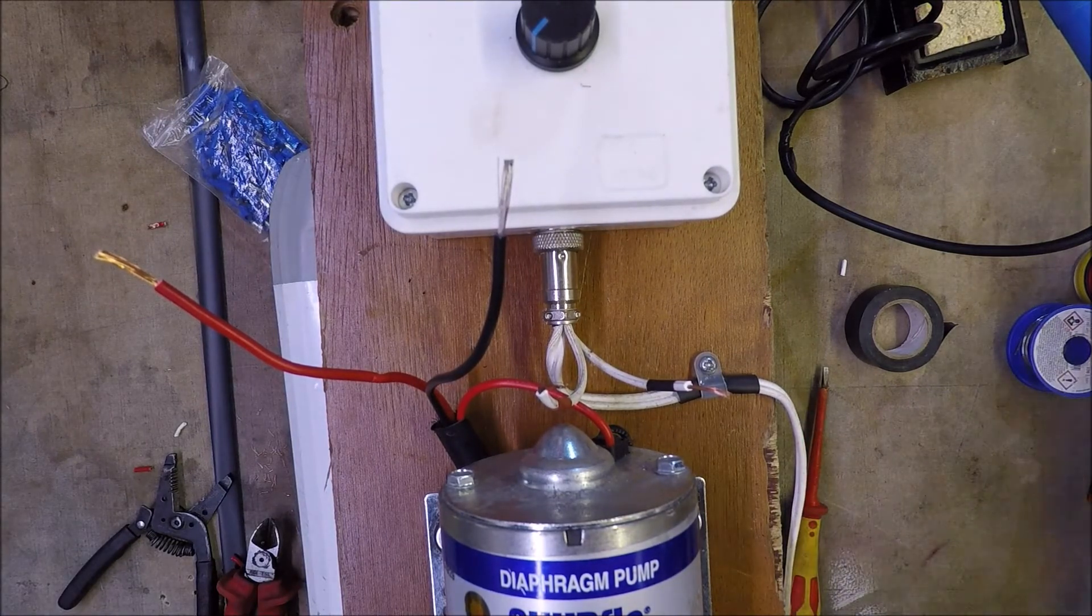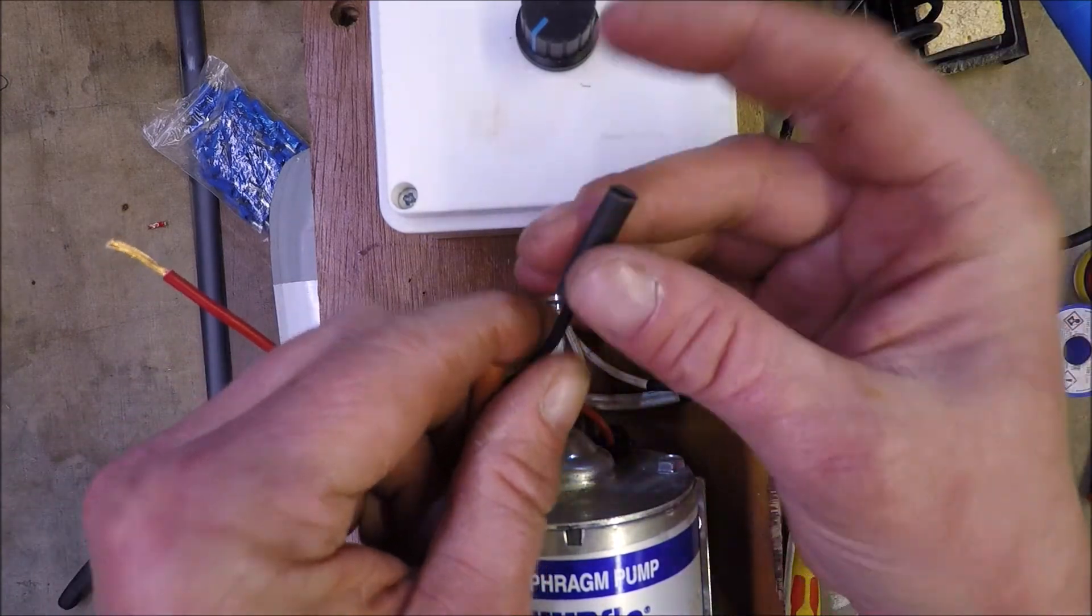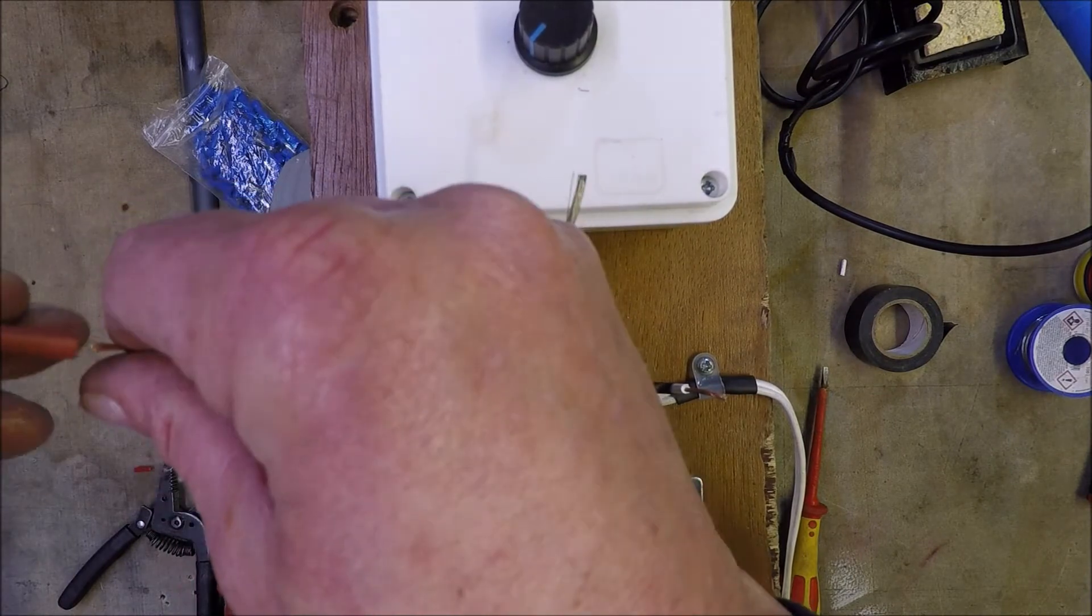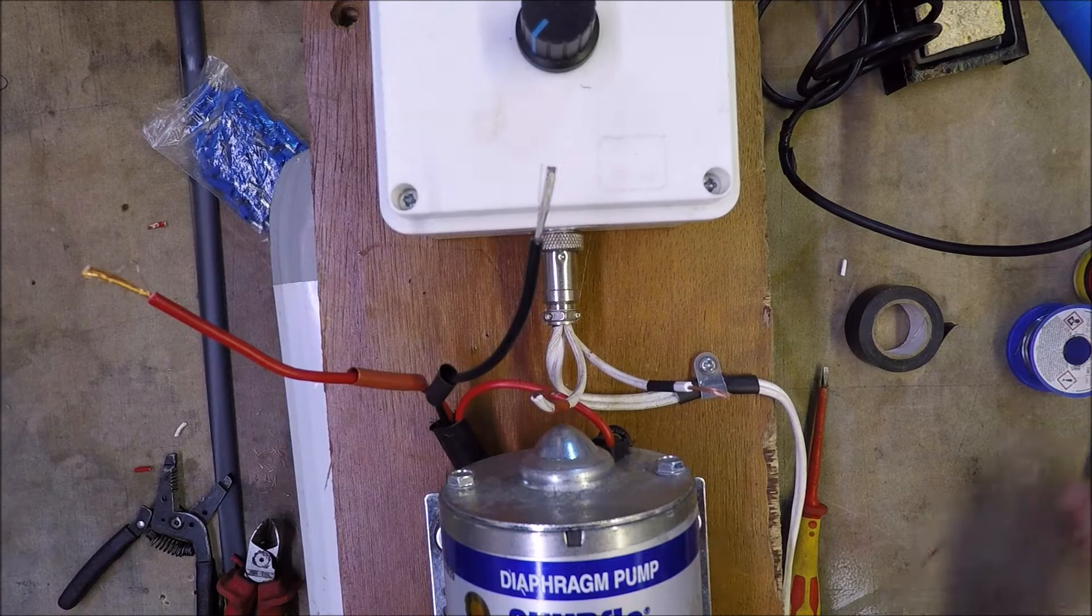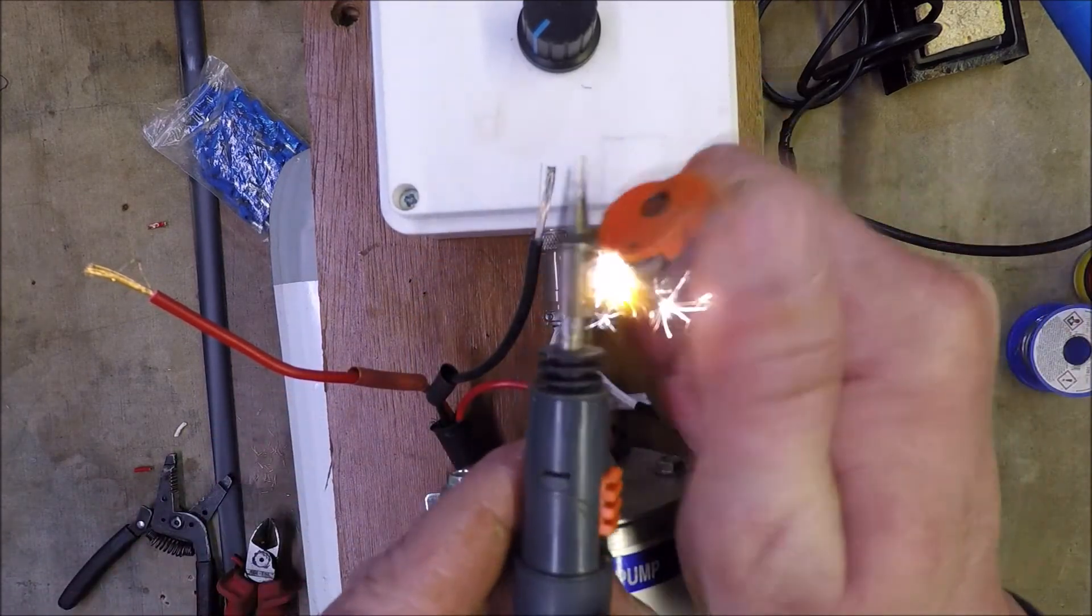Always remember when working with a heat shrink covering, which is a tube, we put that onto our wire before we solder. If you forget to put it on after, you're going to have to use insulation tape. Soldering iron - go for the gas option.